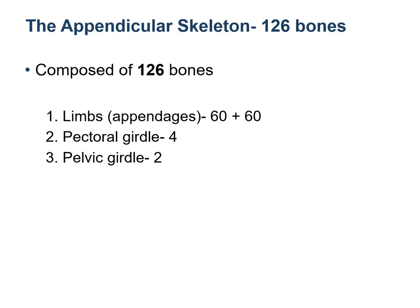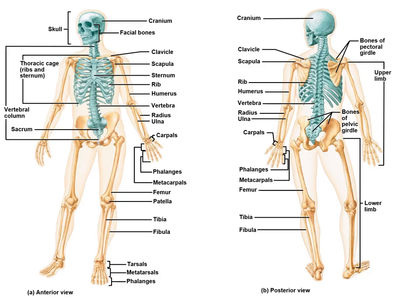The appendicular skeleton is made up of 126 bones: 60 bones of the upper limb, 60 of the lower limb, 4 bones in the pectoral girdle, and 2 in the pelvic girdle. The figure shows the anterior and posterior view of the human skeleton. Everything in greenish blue is the axial skeleton, while the brownish or off-white is the appendicular skeleton.